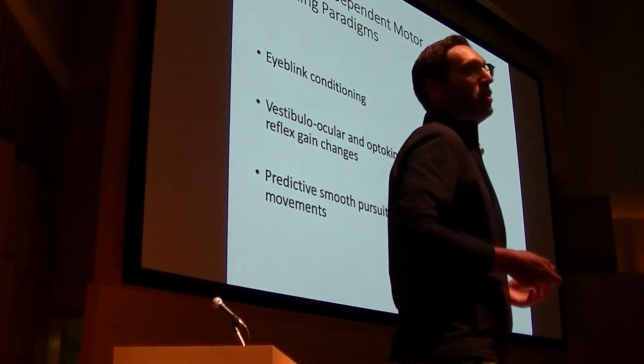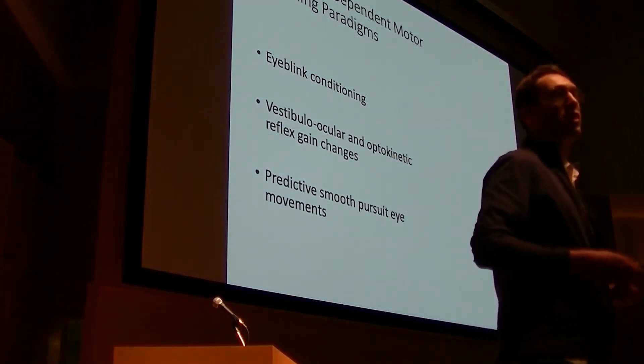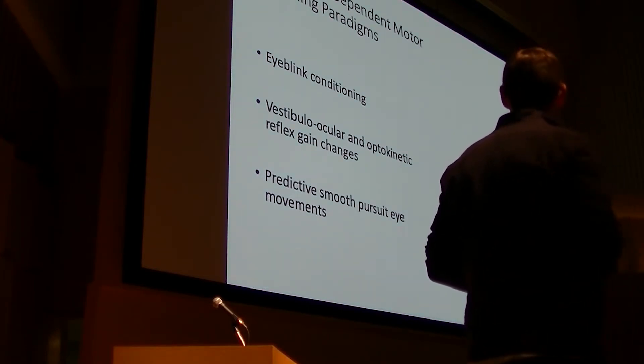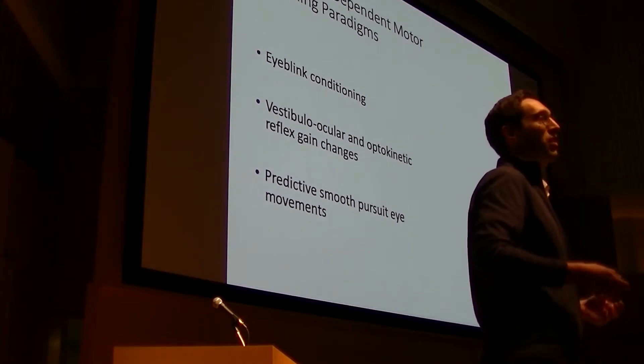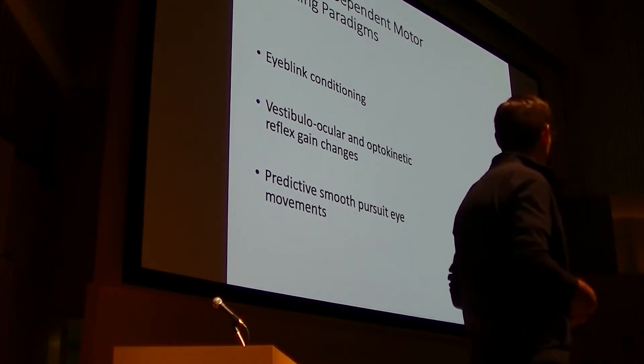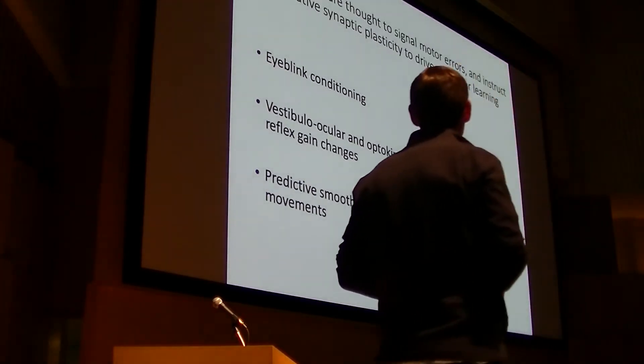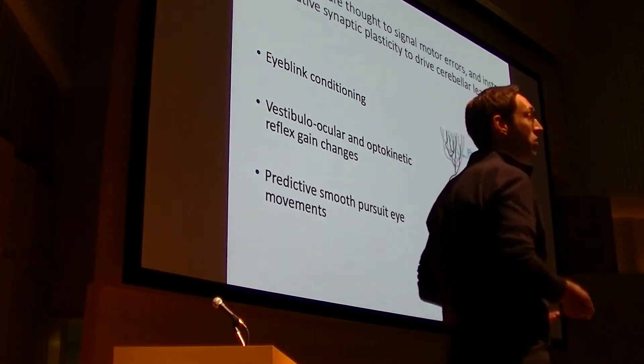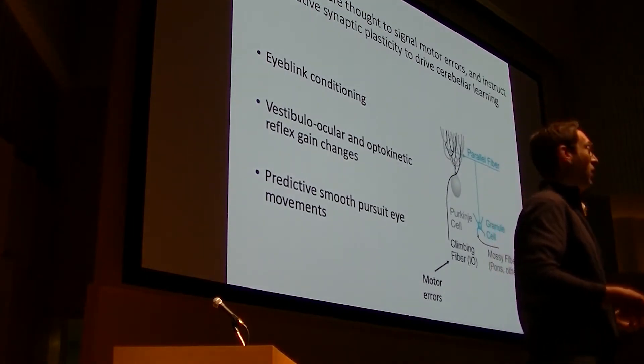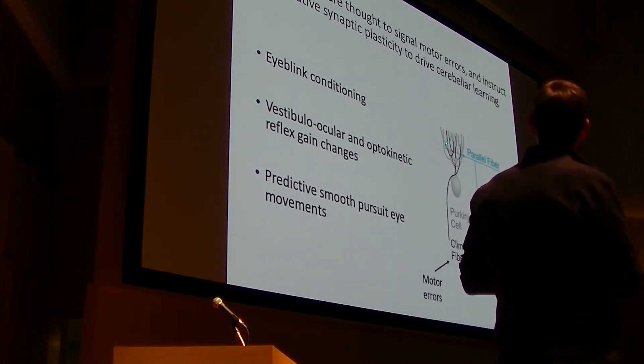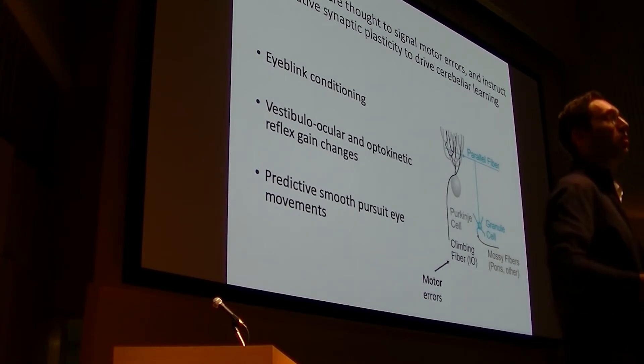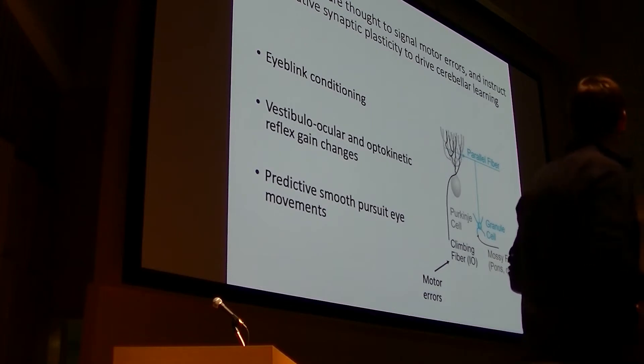So much of what we know about the neural basis of cerebellar learning really comes from a study of a handful of behaviors in animal models. These learning paradigms are centered on modifications of innate behaviors. And what they taught us is that inputs from the inferior olive via climbing fibers to the dendrites of Purkinje cells are triggered by errors in movement. What they do is produce this regenerative calcium spike in the dendrites of Purkinje cells that can serve to instruct heterosynaptic plasticity, in particular long-term synaptic depression at parallel fiber synapses, to then weaken the output of the cortex and correct subsequent movements.